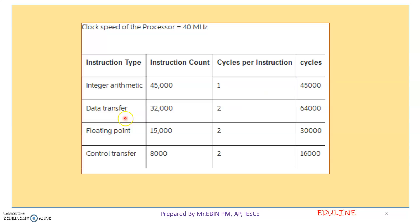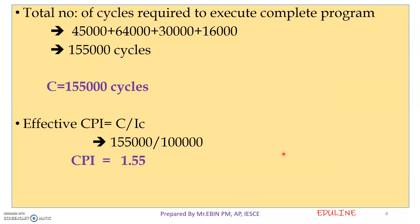The data transfer instructions are 32,000 instructions. One instruction will be done in two clock cycles. The data transfer instructions will be done in the total cycle. That is why we multiply it with one instruction cycle. The total number of cycles required to execute a complete program gives us the answer — this will be the capital C.